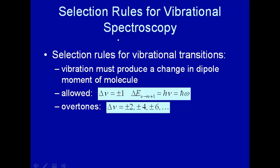Here we're going to talk about selection rules for vibrational spectroscopy. The idea is: under what conditions can you say that there is a transition, and under what conditions can you say there is not a transition? First we'll consider this fact: the vibration must produce a change in the dipole moment of a molecule in order for there to be a vibrational energy transition.